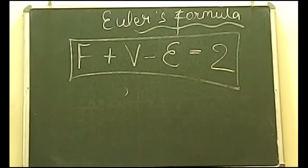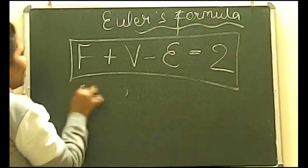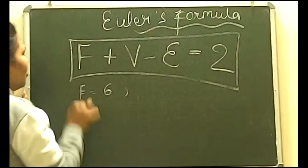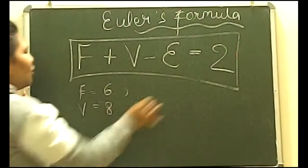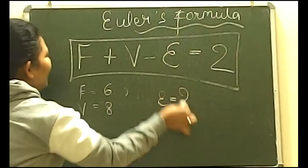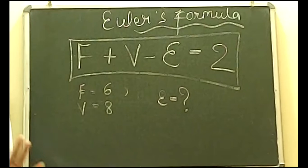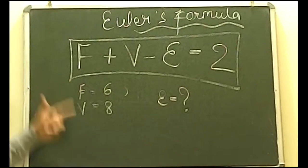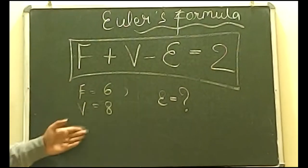Let me give you an example using Euler's formula. If the faces are 6 and the vertices are 8, how many edges will there be? Simply substitute the values: 6 + 8 − E = 2, so E = 12 edges. This is, in fact, the cube.